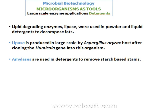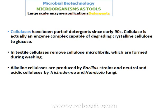After cloning the Humicola gene into a suitable host organism, amylases are used in detergents to remove starch-based stains. Cellulases have been part of detergents since the early 1990s. Cellulase is actually an enzyme complex capable of degrading crystalline cellulose to glucose. In textiles, cellulases remove cellulose microfibrils which are formed during washing. Alkaline cellulases are produced by Bacillus strains, and neutral and acidic cellulases by Trichoderma and Humicola fungi.